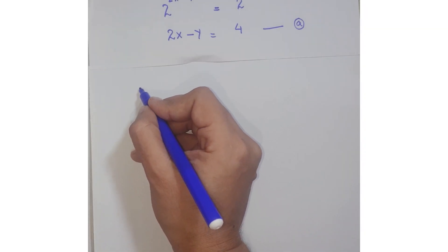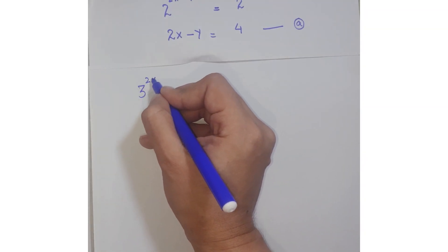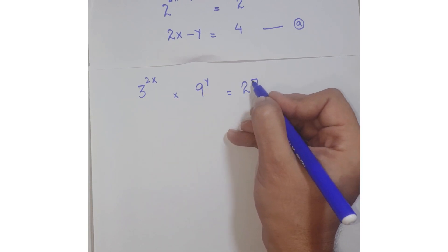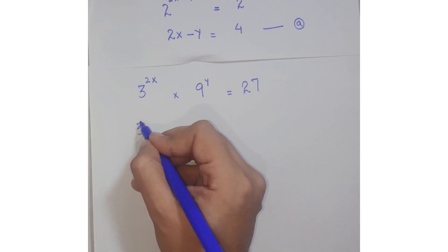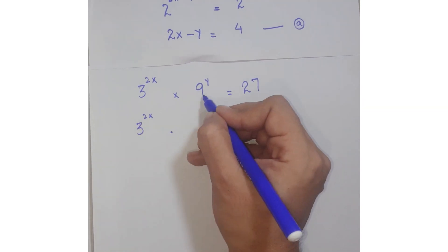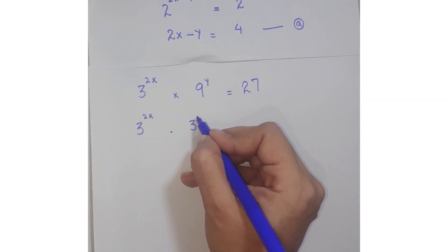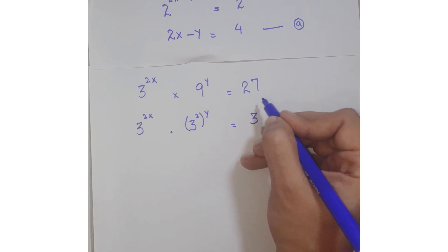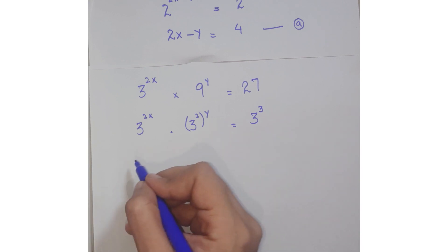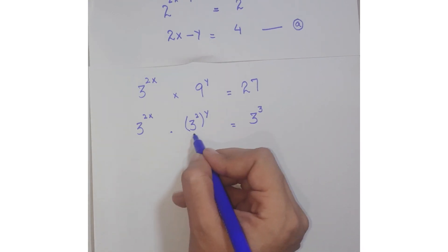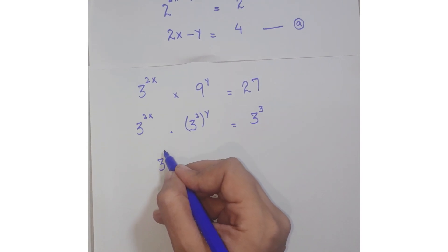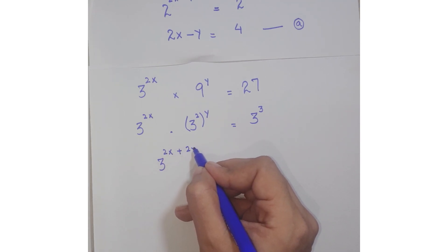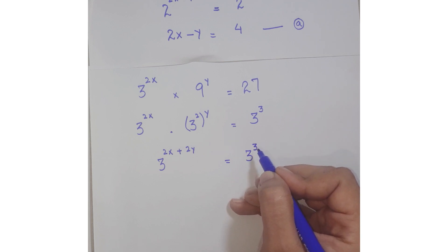Considering equation 2, that is 3 to the power 2x multiplied with 9 to the power y equals 27. Write 9 as the power of 3, that is 3 squared, and write 27 as 3 to the power 3. Since the bases are the same, add up their powers to get 3 to the power 2x plus 2y equals 3 to the power 3.